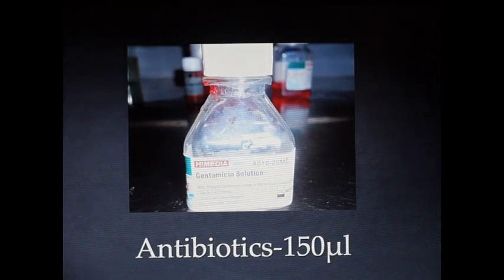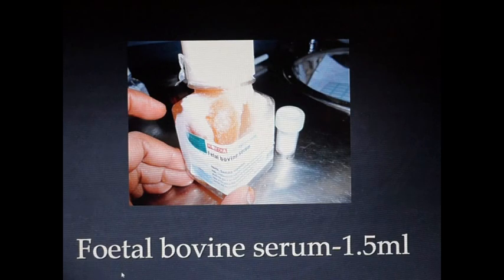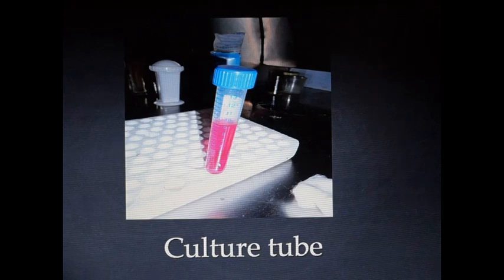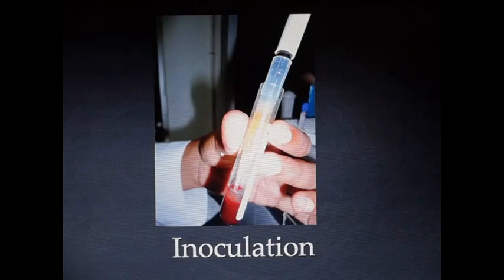Some antibiotics are added to prevent the bacterial growth. Commonly used antibiotics here, we are using Gentamicin. Penicillin, Streptomycin can also be used to prevent the bacterial growth. Around 150 ml of Gentamicin is added to the test tube. For the nourishment of the cell growth, we need serum. Commonly used serum are fetal bovine serum or fetal calf serum. Around 1.5 ml of fetal bovine or fetal calf serum is added to the culture tubes. This is a culture tube containing all the culture materials.